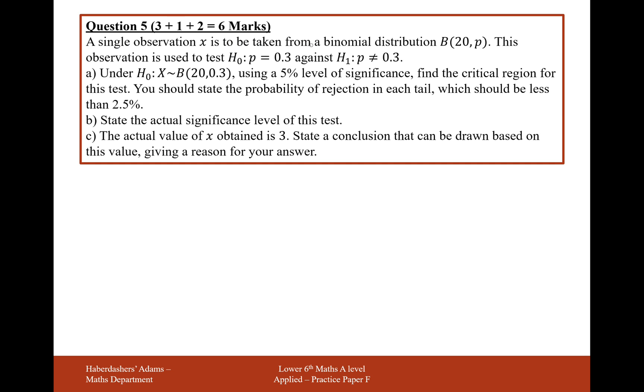A single observation x is taken from a binomial distribution with 20 trials and an unknown probability. This observation is used to test the hypothesis that our probability is 0.3 against an alternative hypothesis that's not equal to 0.3. Let's give it a context here. We have a coin with an unknown bias attached to it and we think that bias might be 0.3 towards heads.